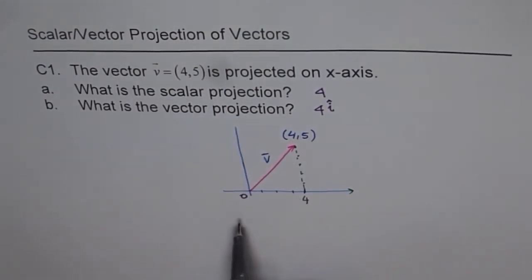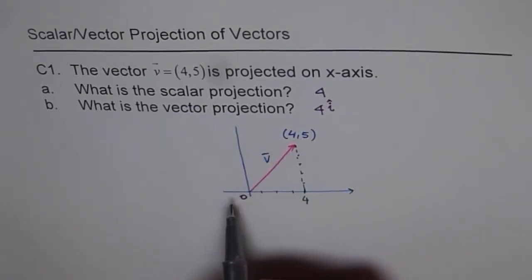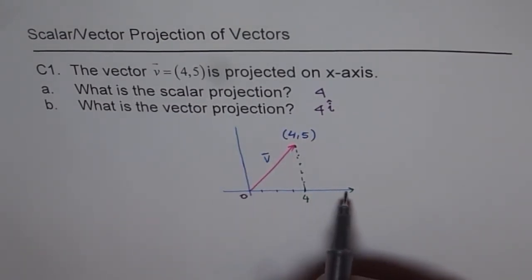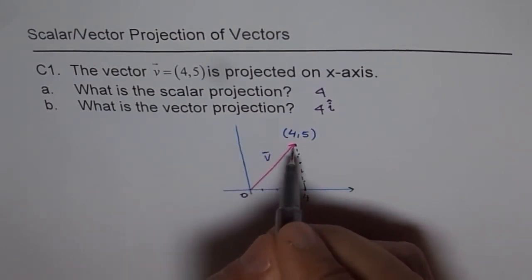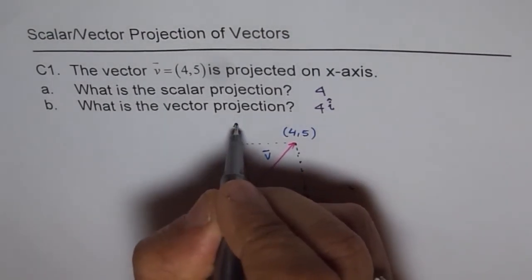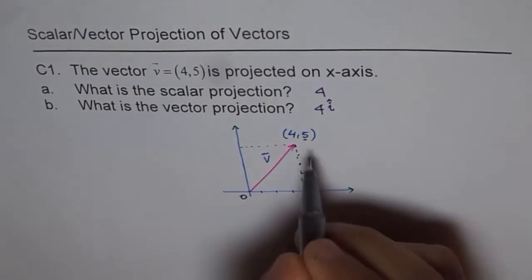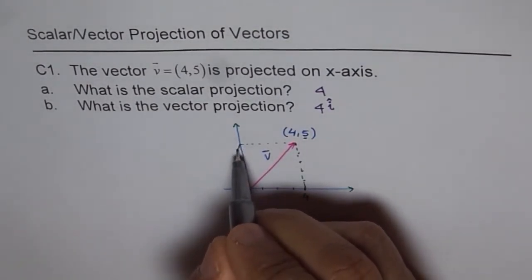Similarly if I have to find scalar and vector projections along y-axis, then the answer would be 5 for scalar projection and 5j. That becomes 5j, the component along the y-axis.